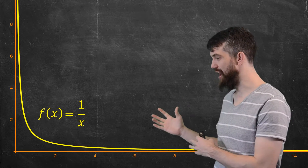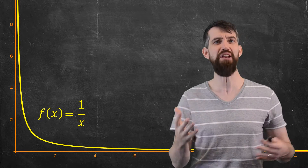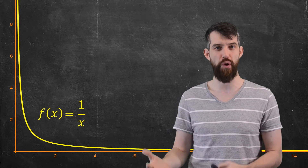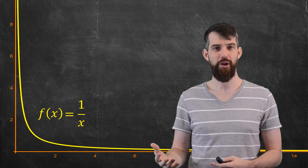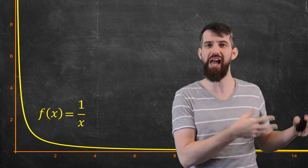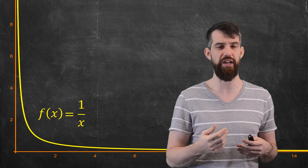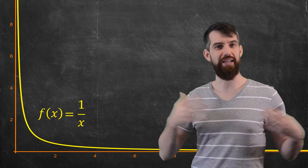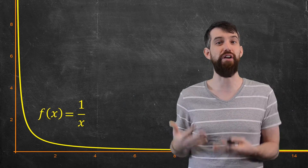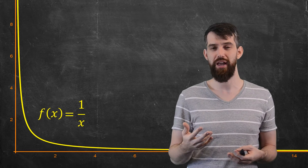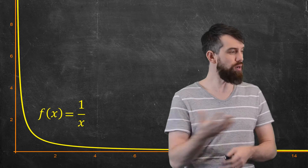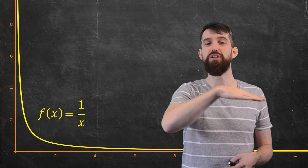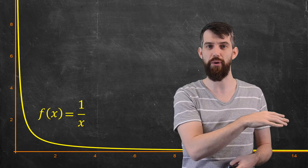The function 1 over x is interesting when you consider the area under the curve, because there are actually two different kinds of going off towards infinity. There's a vertical asymptote where, as x goes to 0 from the right, the function goes up to positive infinity. There's also a horizontal asymptote: as x goes to positive infinity, the function comes down closer and closer to 0.